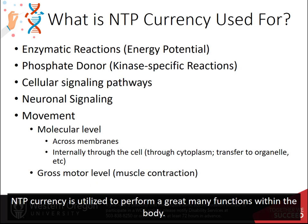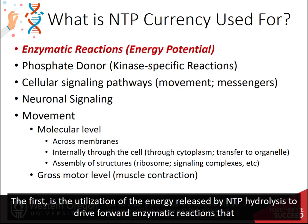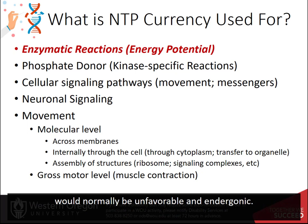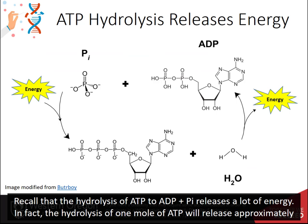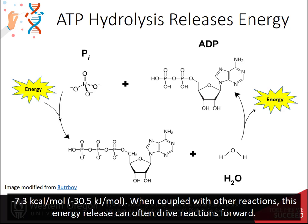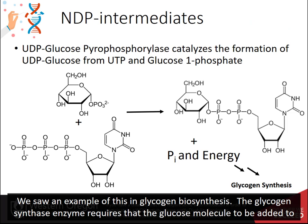NTP currency is utilized to perform a great many functions within the body. The first is the utilization of energy released by NTP hydrolysis to drive forward enzymatic reactions that would normally be unfavorable and endergonic. Recall that the hydrolysis of ATP to ADP and Pi releases a lot of energy — approximately negative 7.3 kilocalories per mole or negative 30.5 kilojoules per mole. When coupled with other reactions, this energy release can often drive reactions forward.